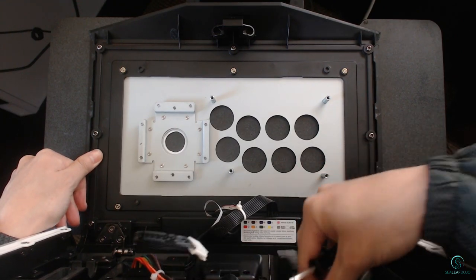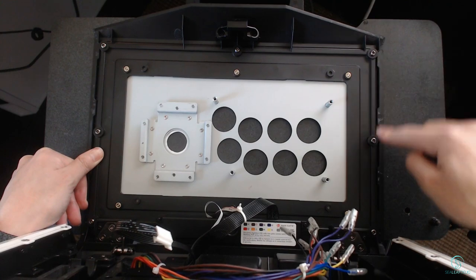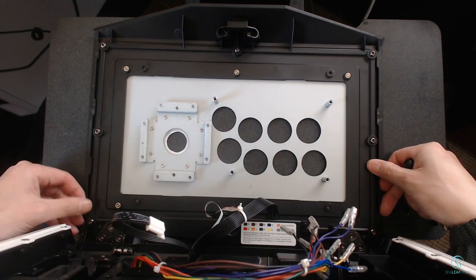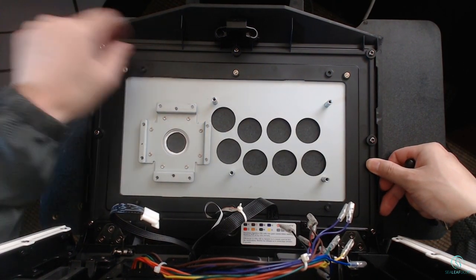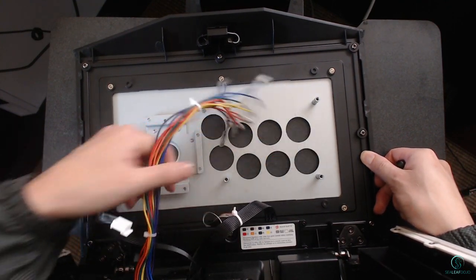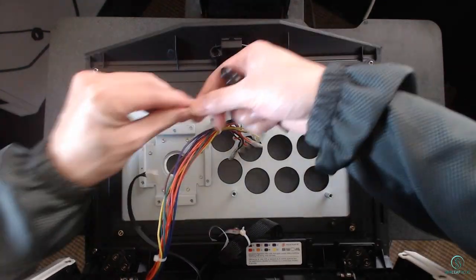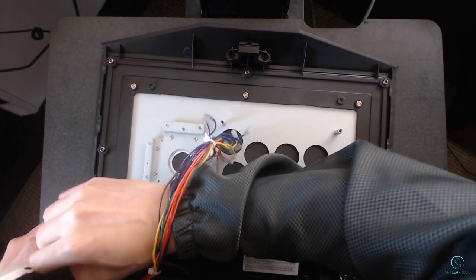Once that is all done, you will need to make a plan for the prototype faceplate. If the controller allows the removal of the faceplate, you can simply create a new one and place it where the stock one was. Otherwise, you may need to build a shell that covers the controller. For the TE2 Plus, the faceplate can be removed so a simple prototype faceplate will suffice.